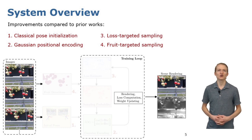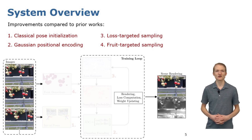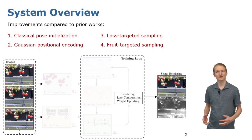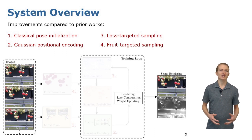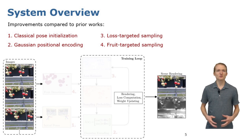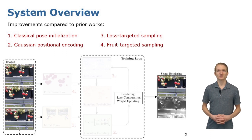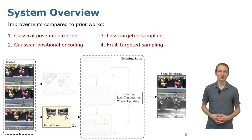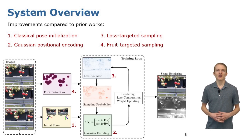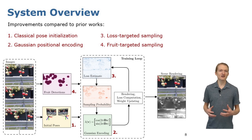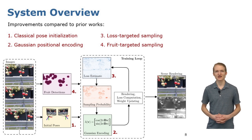Our system builds upon recent advancements in neural volume rendering, whereby a deep neural network leverages a supervised differentiable rendering pipeline to learn the 3D contents of a scene from RGB images. Our main improvements over related works are a classical pose initialization strategy, use of Gaussian positional encoding, and use of loss and fruit targeted sampling during training.